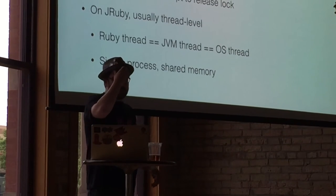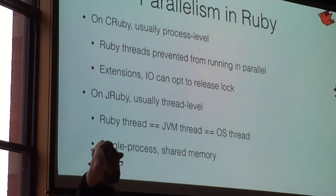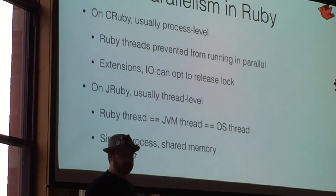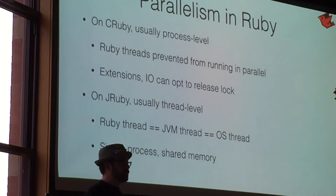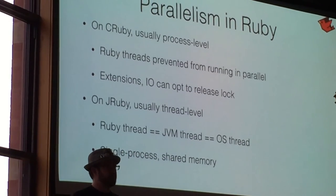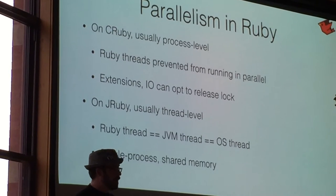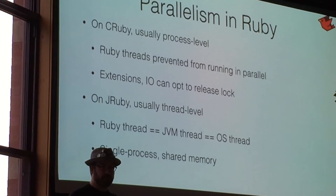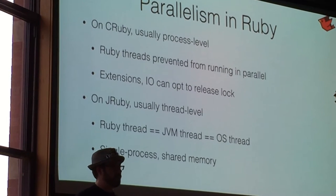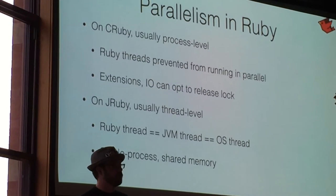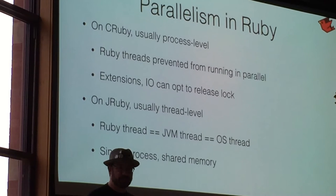So on JRuby, usually you're doing thread-level parallelism. We don't have a global lock, we don't have anything to prevent parallelism. A JRuby thread maps directly to a JVM thread, which in pretty much every JVM is a system thread. So you do thread.new or an active framework — you're actually running in parallel. And then we don't have a lot of that crosstalk. You're using the same memory, you're dealing with the same data structures.